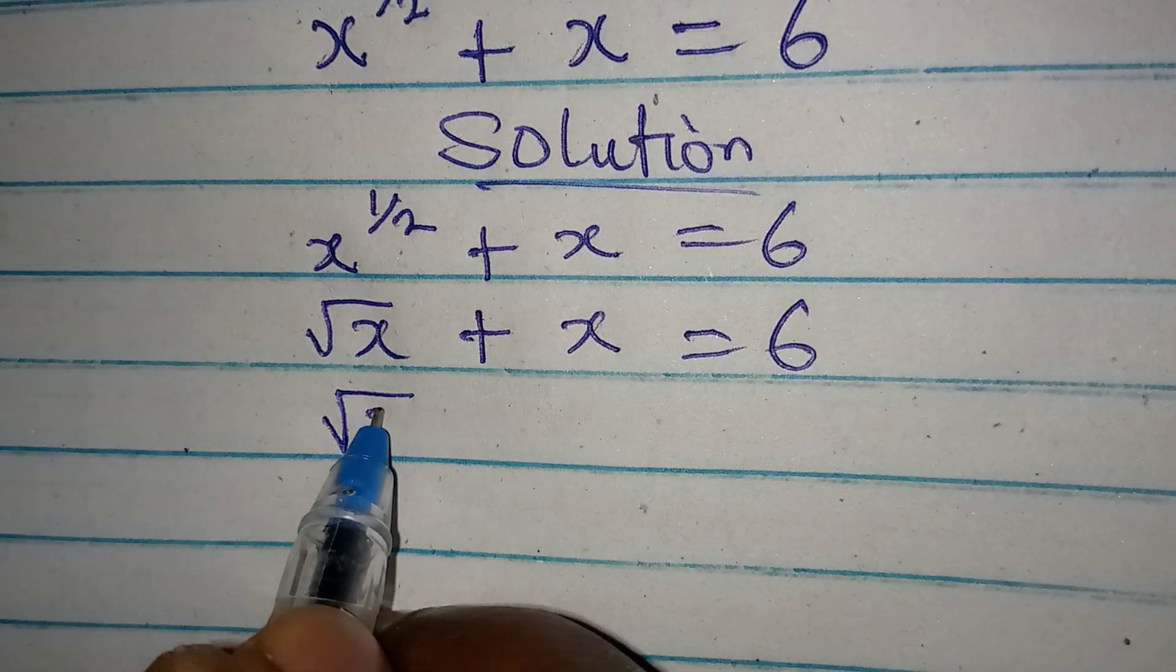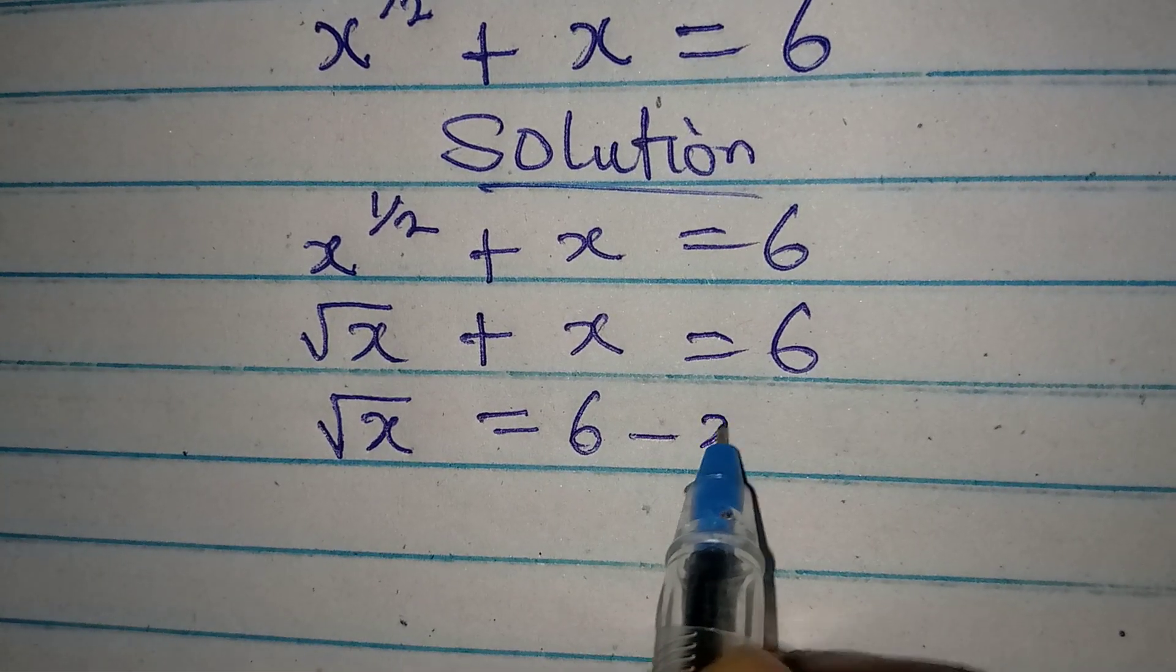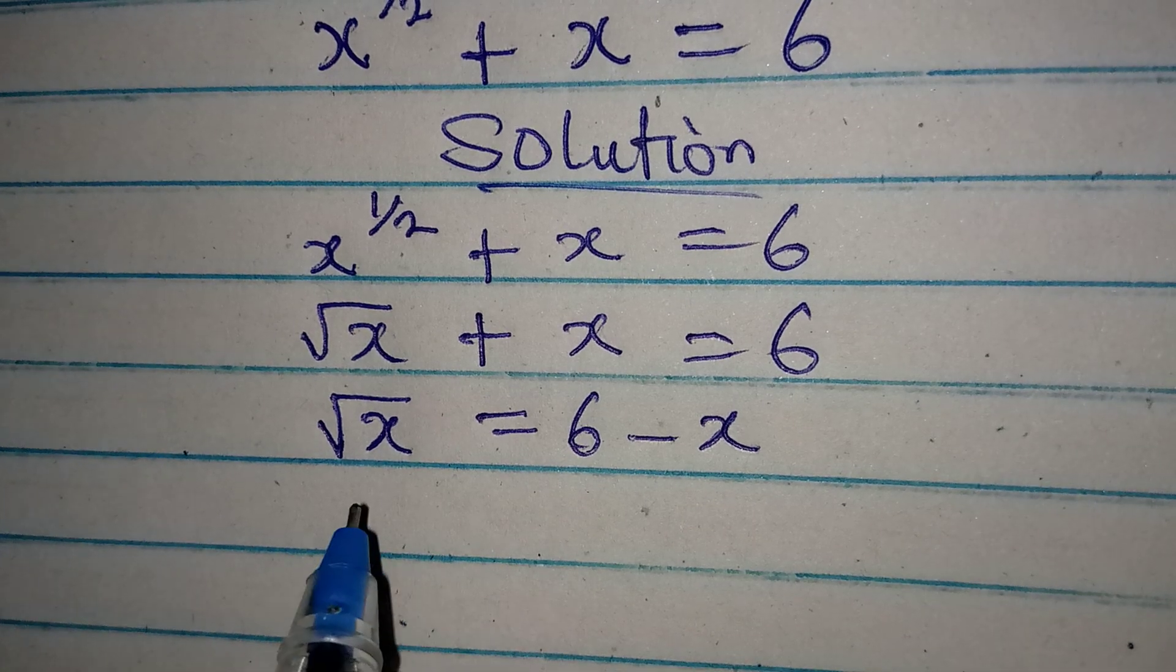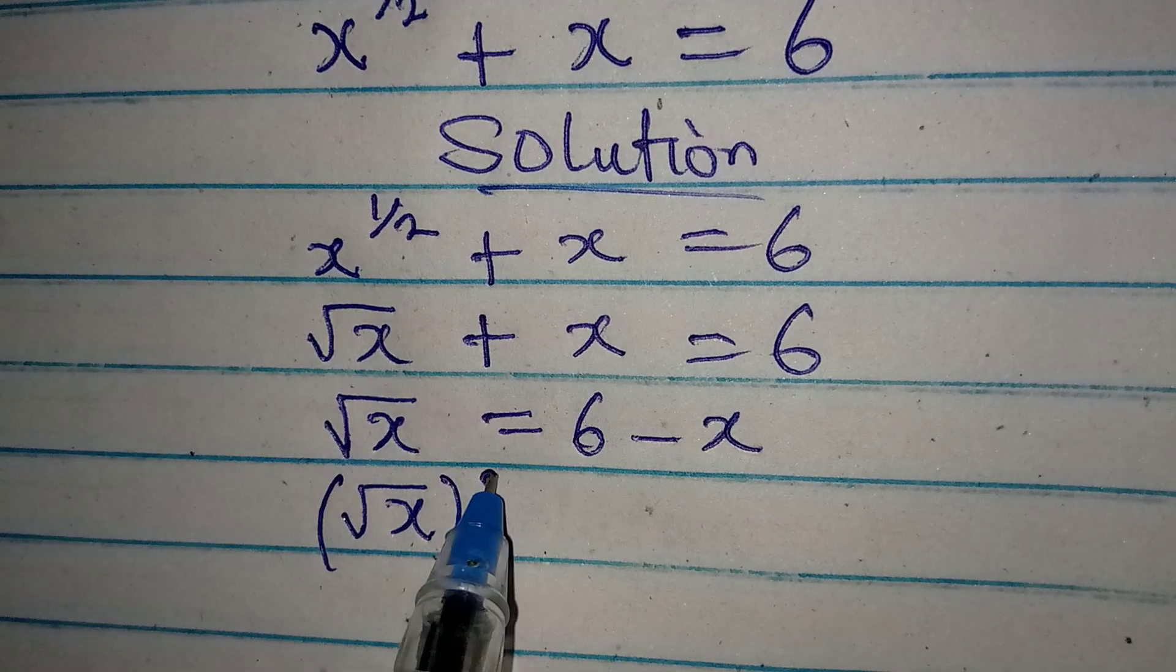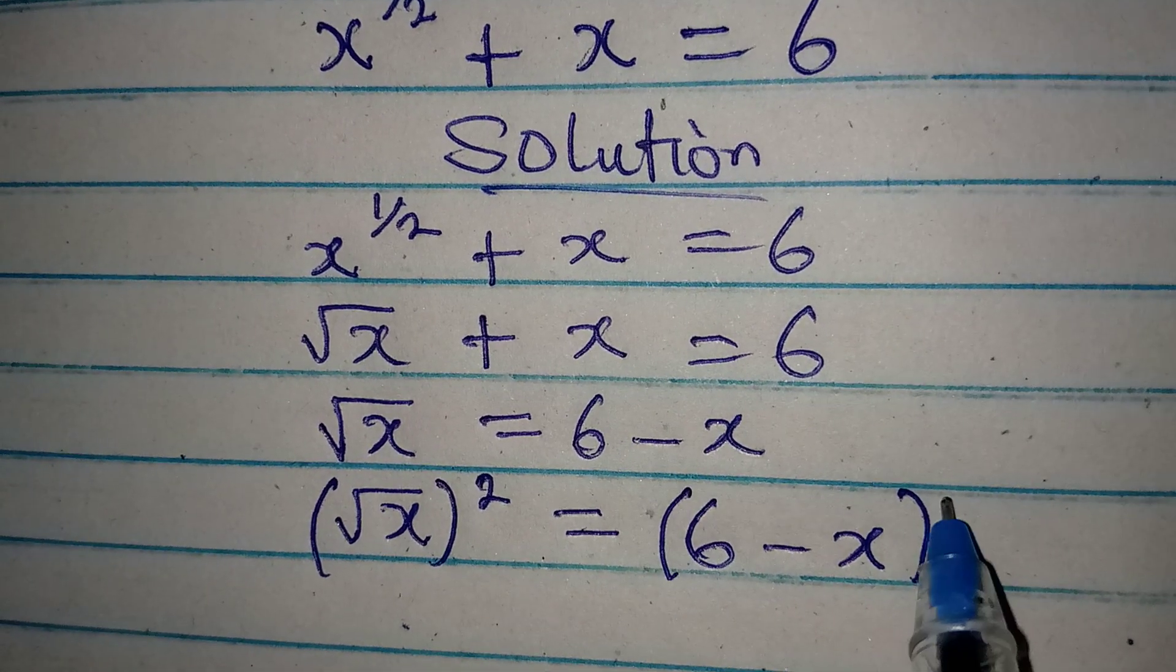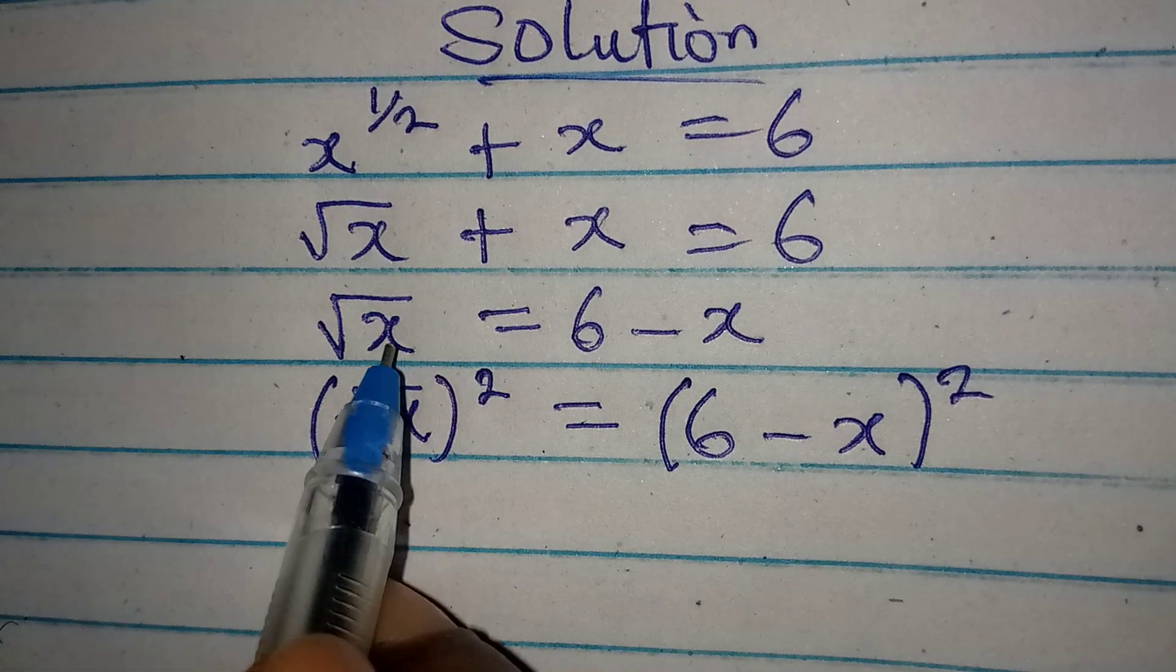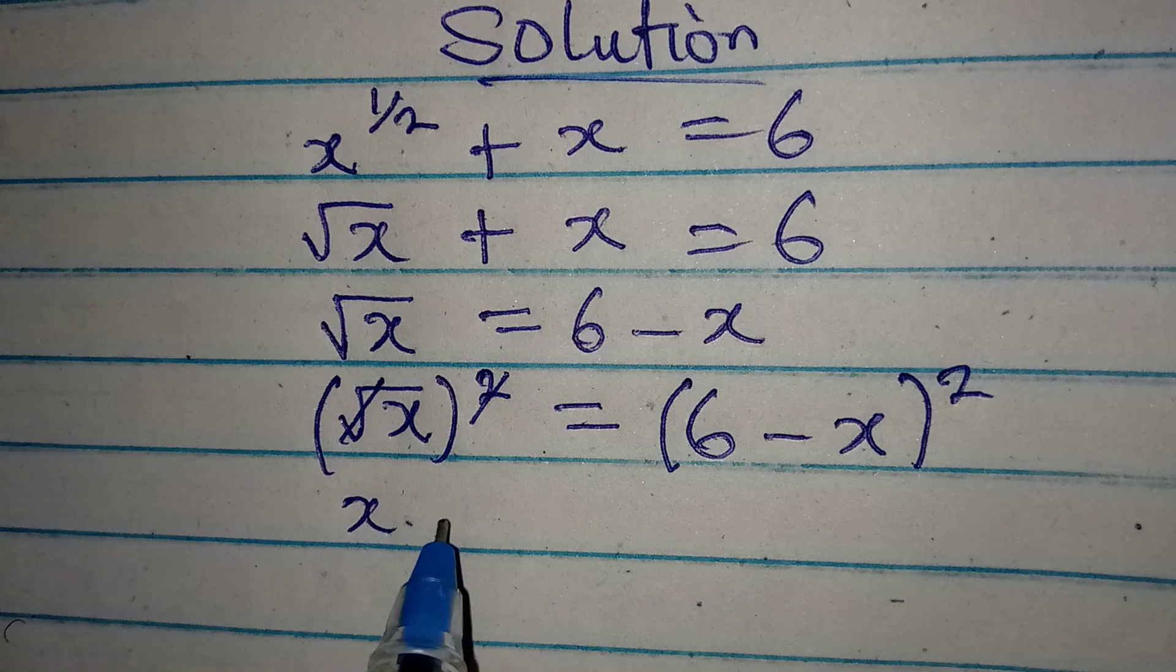The first thing is to make root x the subject, so we'll have root x equal to 6 minus x. Then the next thing is for us to square both sides. Root x squared will equal 6 minus x squared. We square this so that we can eliminate the square root.